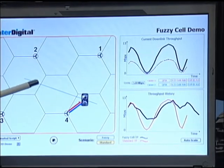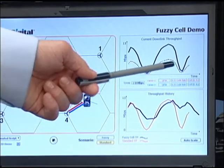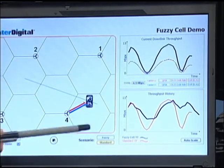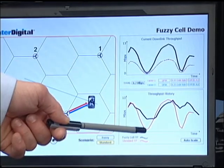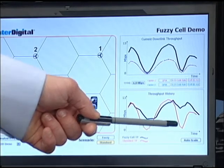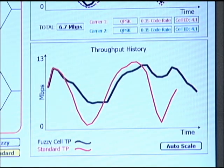We see as we just crossed the cell boundaries here, we see a very large drop-off in throughput. That standard throughput is graphed here in the red and we see a very large drop in this throughput as we cross those cell boundaries.